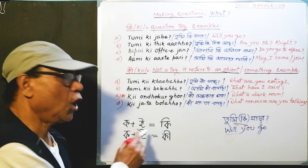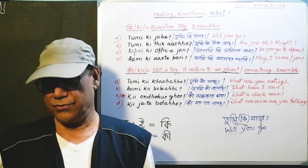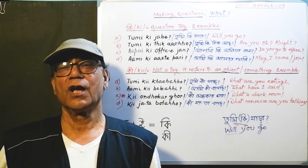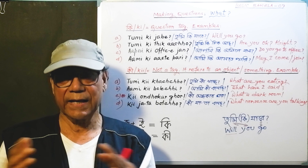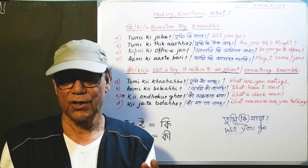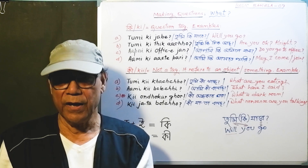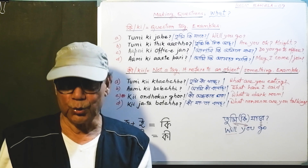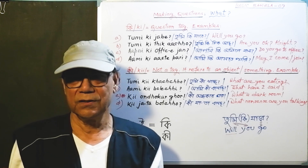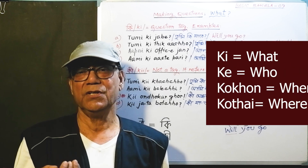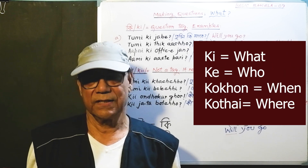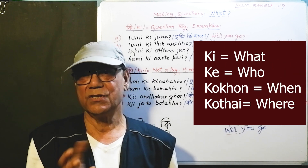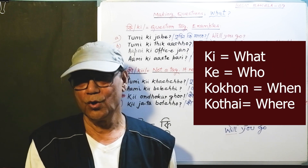Ka questions means: ki (what), ke (who), kobe (when), kothai (where), kakhon (when). Ki means 'what,' ke means 'who,' kakhon means 'when,' kothai means 'where,' etc.